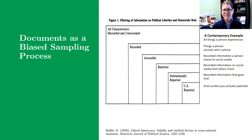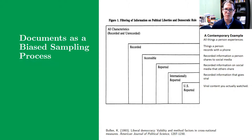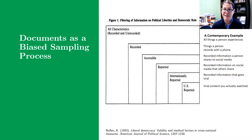Another way to think about this biased selection process — one that may resonate more today — is phones and social media. Think about all the things a person experiences; only a subset gets recorded on phone video, pictures, or notes. Only a chunk of that gets posted to social media where others can access it. Only a small part of what we post gets viewed because of algorithms that determine who sees what. I can post something and only my three closest friends ever see it.